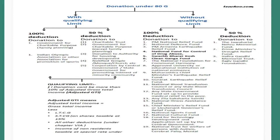Let's see what donations come under section 80G without a qualifying limit. As shown in the diagram, deductions are divided into two categories — 100 percent deduction and 50 percent deduction. If the donation is made to the Prime Minister's National Relief Fund, National Defence Fund, Prime Minister's Armenia Earthquake Relief Fund, National Fund for Control of Drug Abuse, Swachh Bharat Kosh, Clean Ganga Fund, and many more, then 100 percent of the donation shall be allowed as deduction.